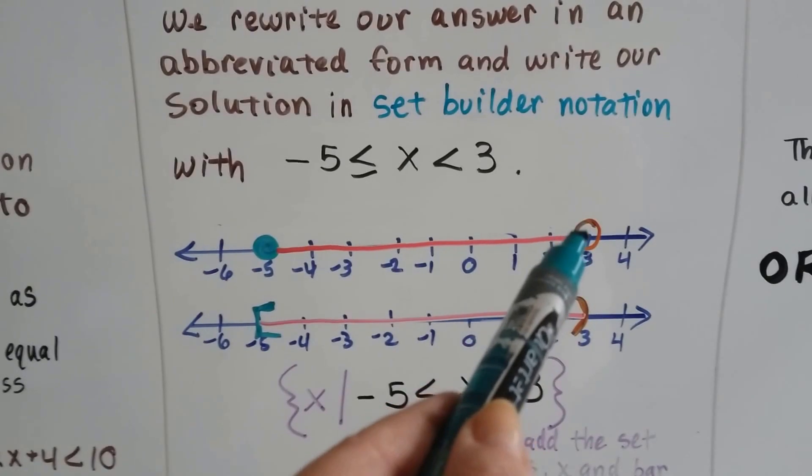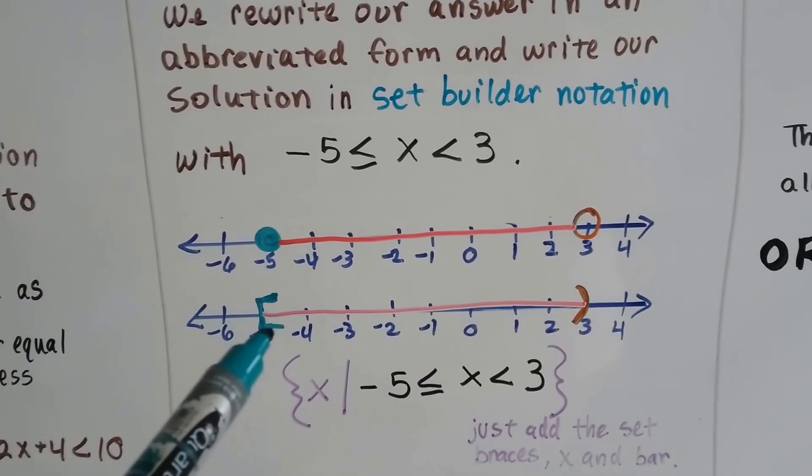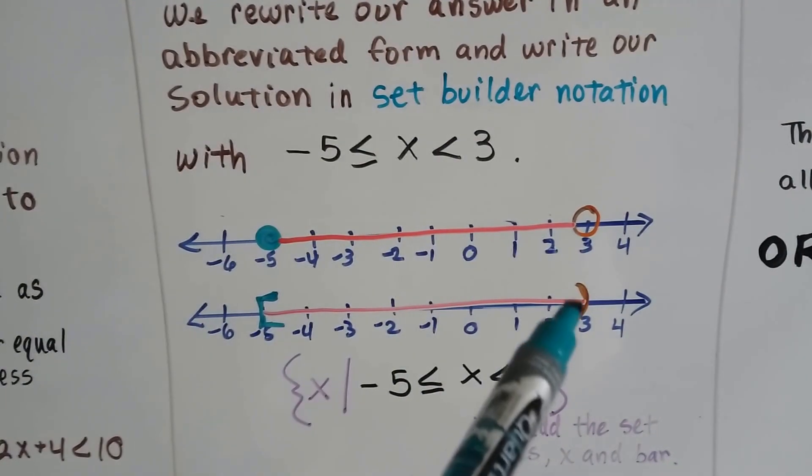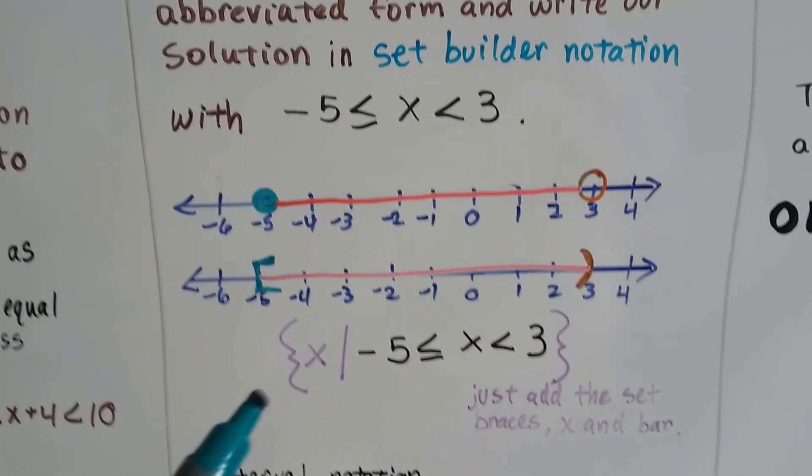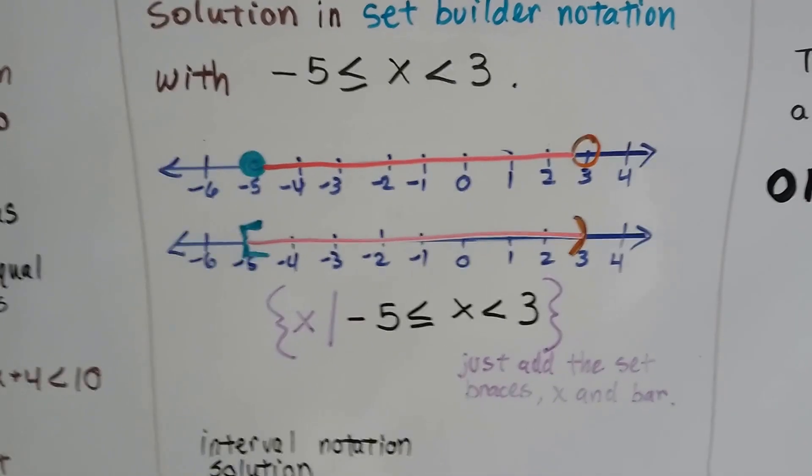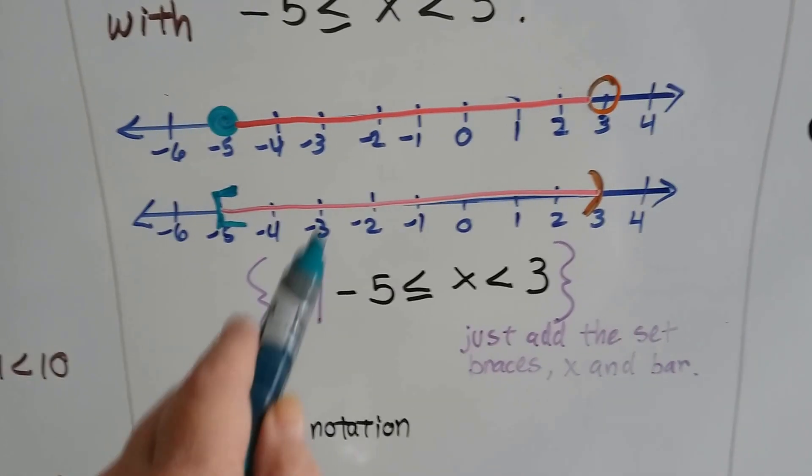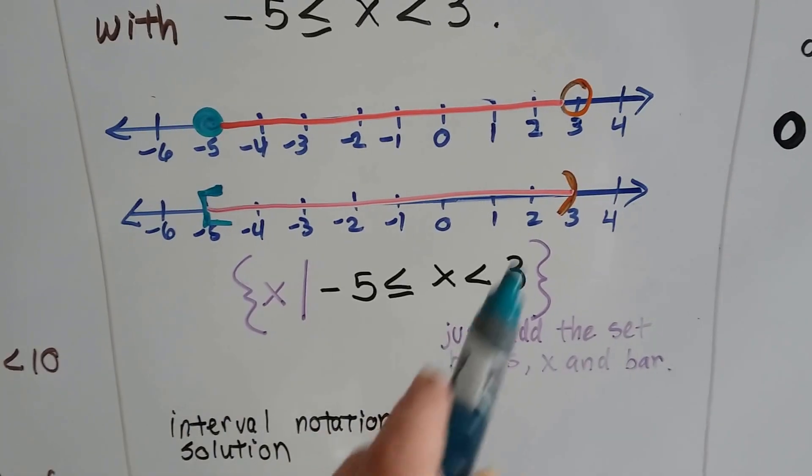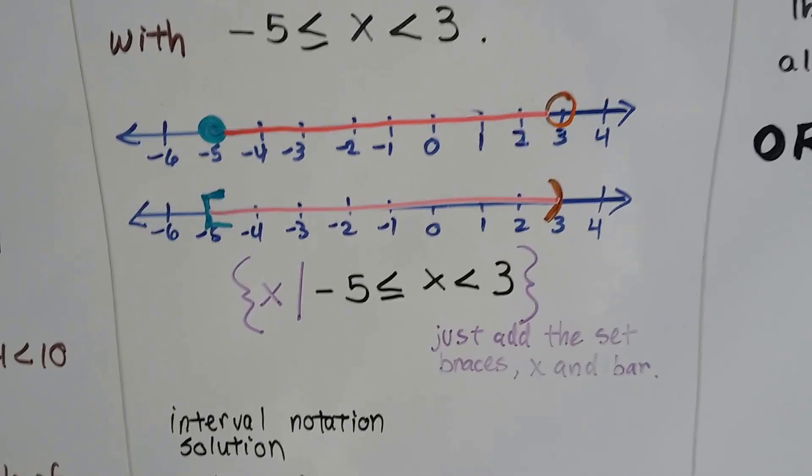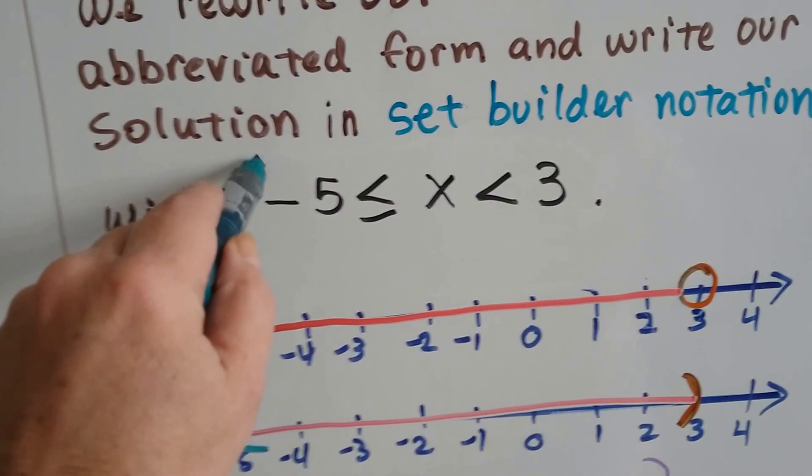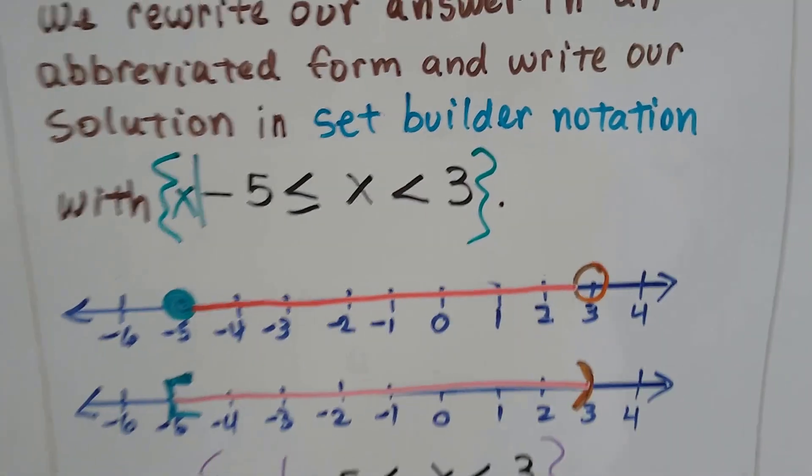In interval notation, we would use a bracket on the negative 5 and a parentheses on the 3, and then that's our solution. So in set builder notation, all we have to do with this is put the x and the such that line and put our set braces. All we had to do was this, and we were done.